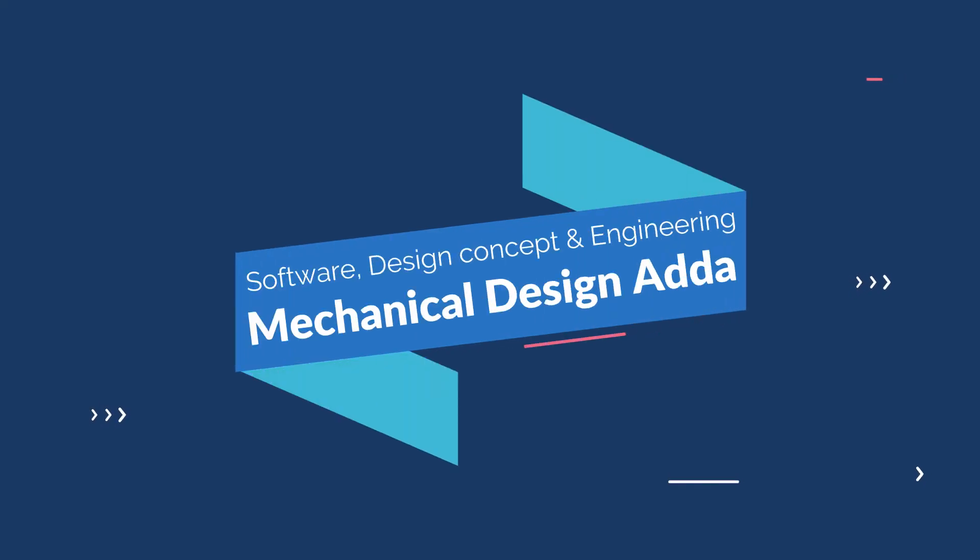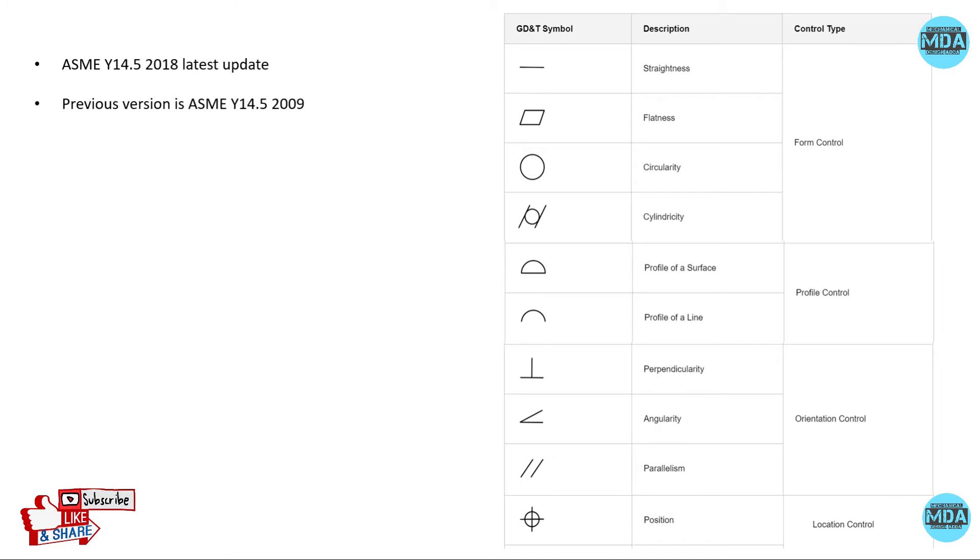Hello friend, welcome to my YouTube channel Mechanical Design Adam. In this video, you are going to learn why concentricity and symmetricity symbols are removed in ASME Y14.5 2018.